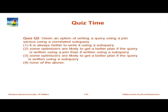This brings up the quiz question: given an option of writing a query using a join versus a correlated subquery, what is the right choice? It is not always better to write it using a subquery — depending on your database, it might be clever enough to rewrite it or not. Some optimizers are likely to get a better plan if the query is written using a join rather than a subquery. SQL Server will probably be cleverer than you, so it does not matter for SQL Server, but for PostgreSQL, writing as a join is probably better.